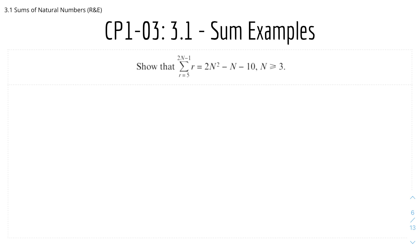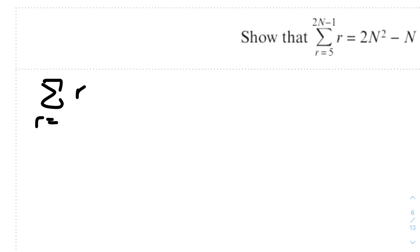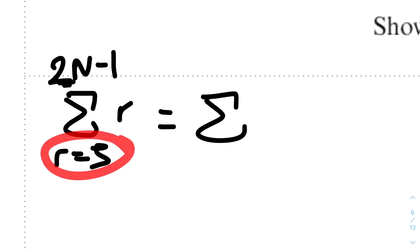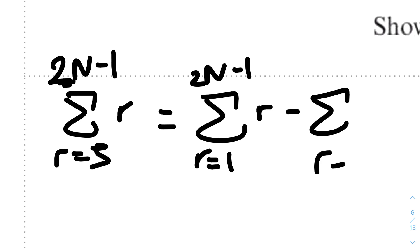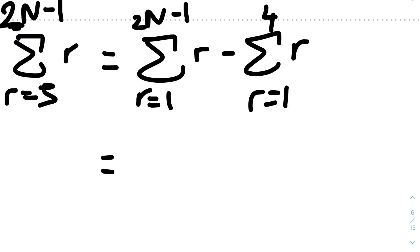Here we have an example. Show that the sum of r from r equals 5 to 2n−1 equals 2n²−n−10, where n ≥ 3. We first write out the original expression: sum of r from r=5 to 2n−1. We have to split this into two sigma notations because the lower limit isn't 1. So we write: sum of r from r=1 to 2n−1, minus the sum of r from r=1 to 4, because the lower limit is 5, so 5−1 = 4.